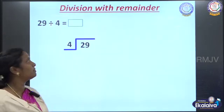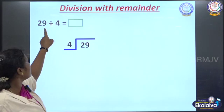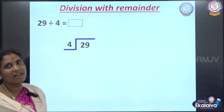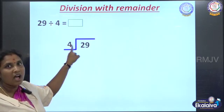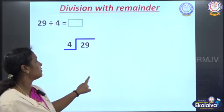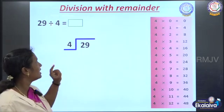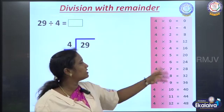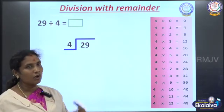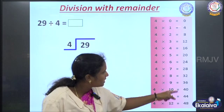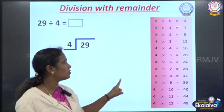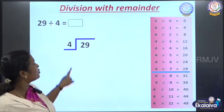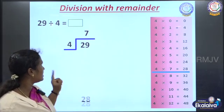Let us see one more example: 29 divided by 4. Now we are going to find how many times 4 is going to come in 29. We write the 4 times table and look for 29. 29 is not there. So we go to the number before it — 28 is there. 4 sevens are 28. So we write 7 and 28.